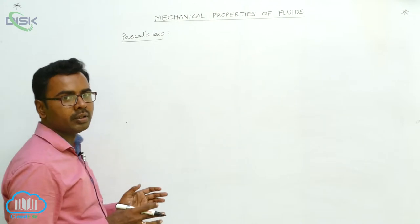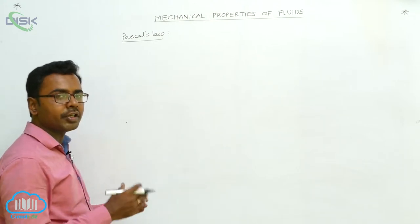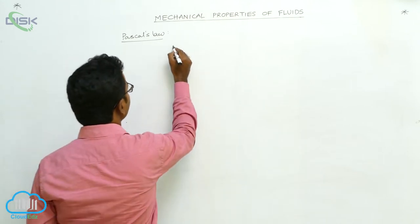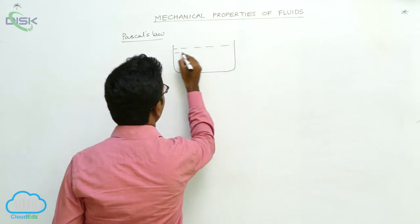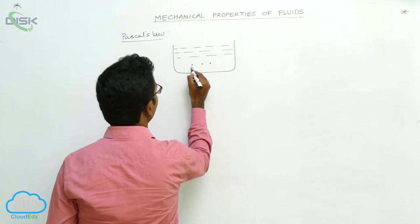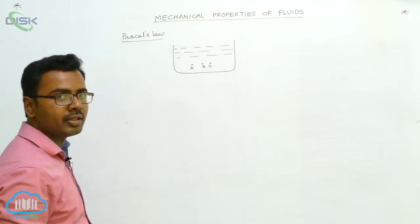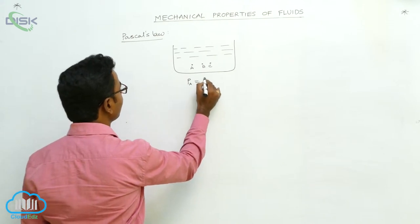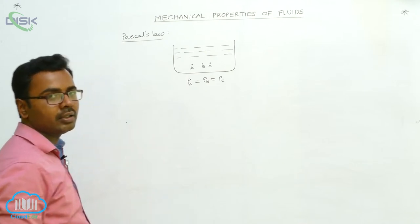According to this law, it states that the pressure is the same at all points which are at the same horizontal level. Let us consider a container containing some liquid. Consider three points A, B, and C. The three points A, B, C are at the same horizontal level, so the pressure at those three points will be the same. We can write: pressure at A equals pressure at B equals pressure at C. This is Pascal's law.